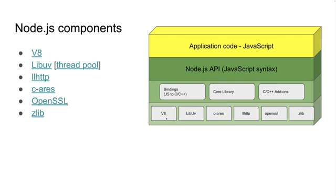c-ares is a C library for asynchronous DNS request resolution. It runs on POSIX — Linux initially. If you want to see the code, here is the source. I'm not an expert in this — this is the code. OpenSSL is for cryptography and secure communication.